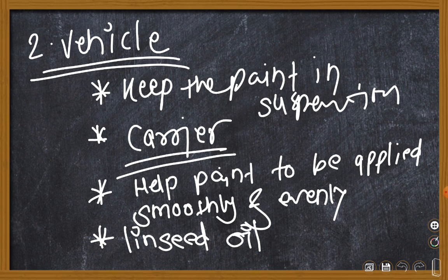What we understood regarding vehicle: it keeps the paint in binded state, bound state. It keeps the paint in suspension. It helps the paint to spread evenly without any discontinuity in its application over the surface upon which the paint is to be applied. Example is linseed oil.